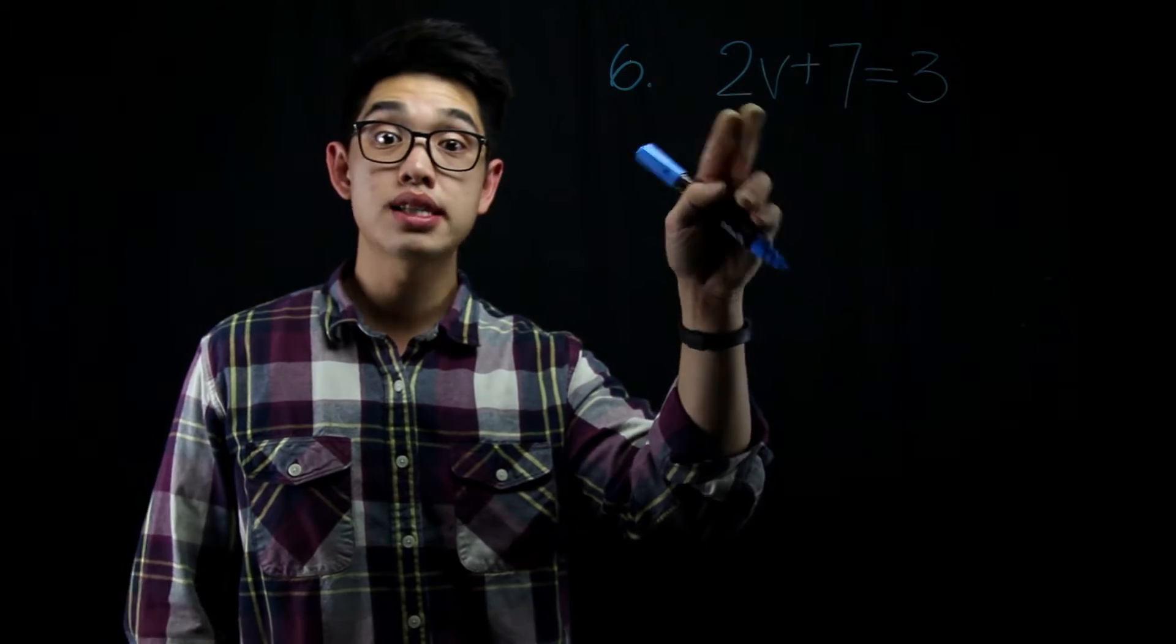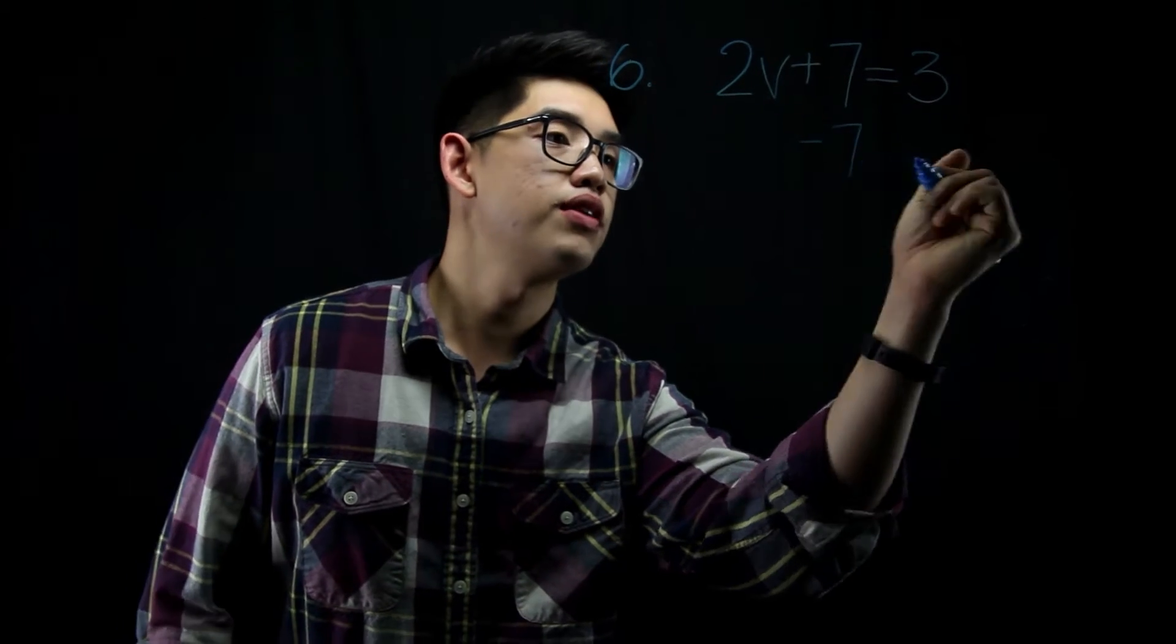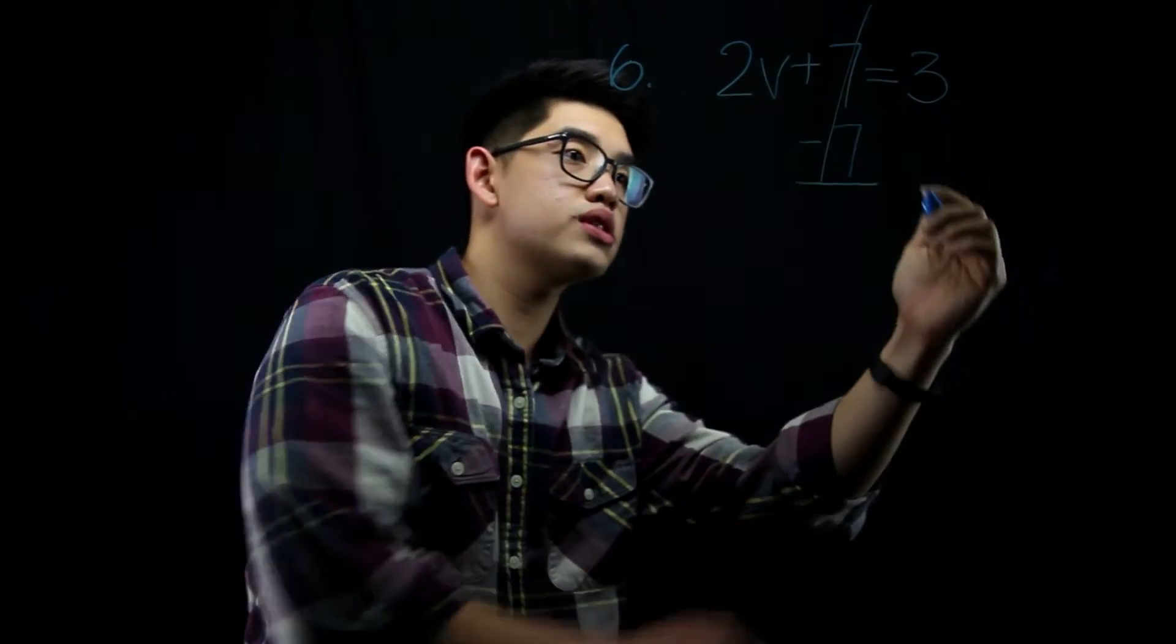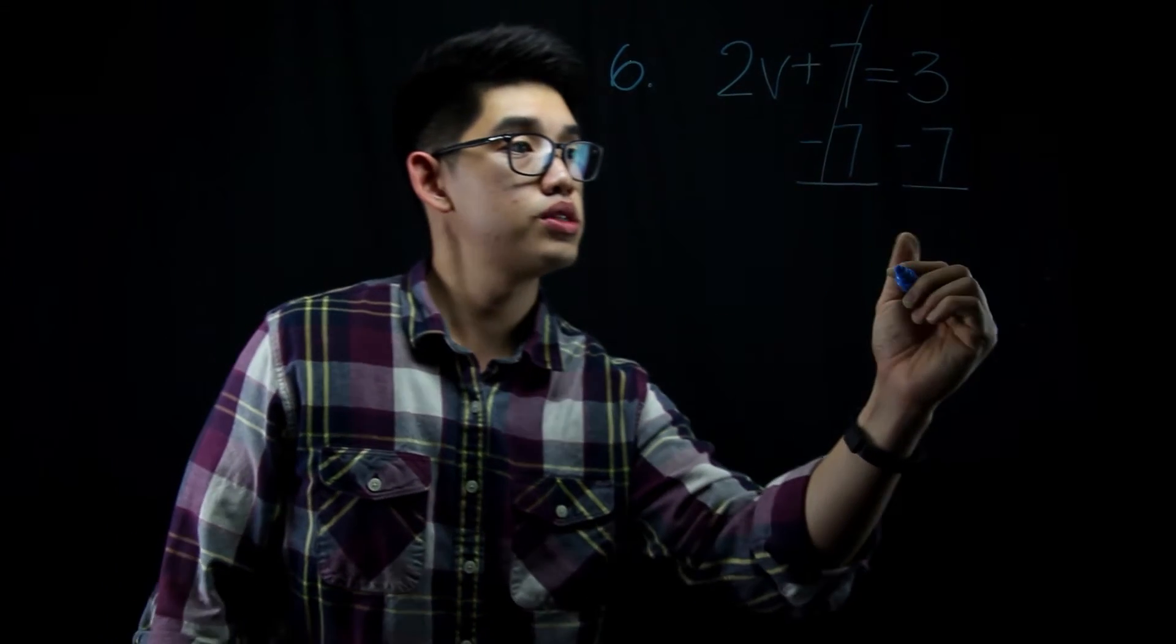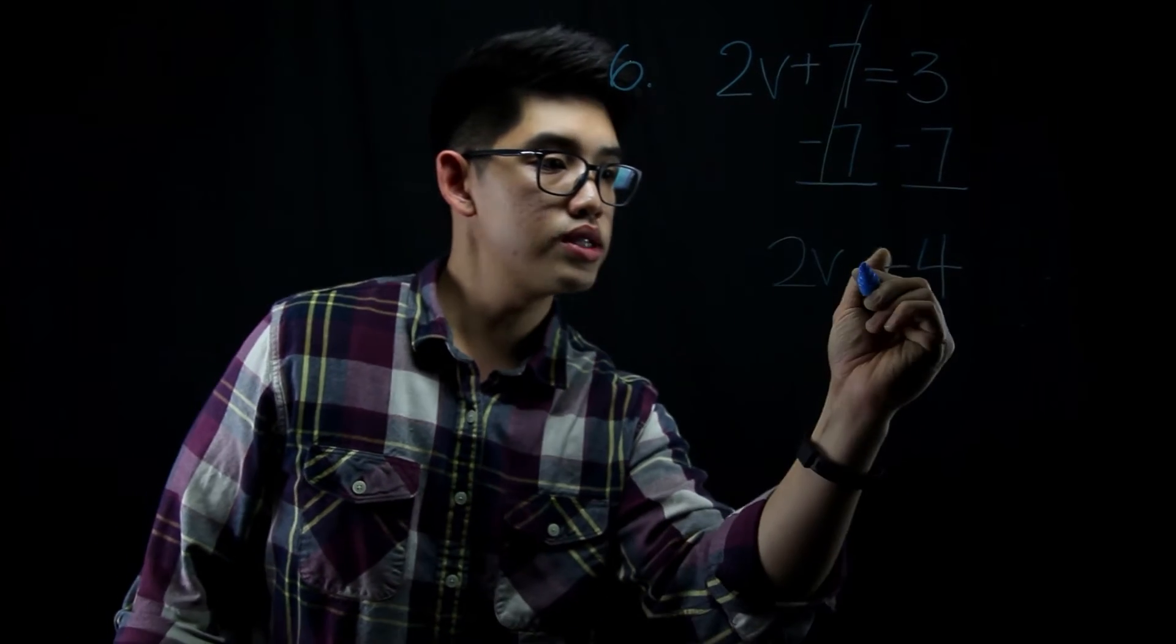I'm going to subtract 7 first. Because this is plus 7, I'm going to do the inverse operation, that's minus 7. And if I subtract 7 here, I've got to subtract 7 on the other side of the equation. So that's going to be minus 7. I can drop down to 2v, drop down the equal sign.